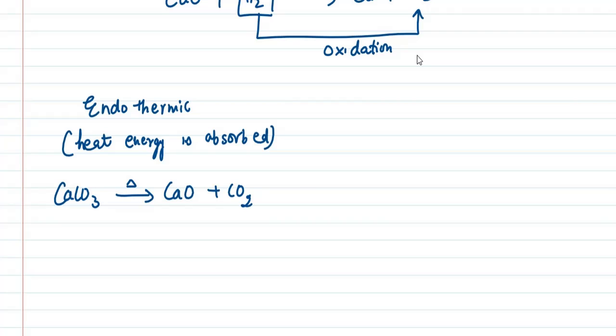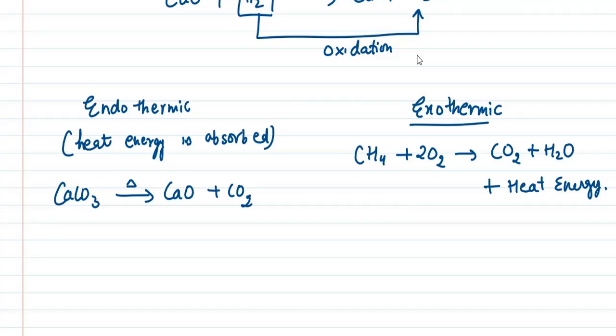On the other side, we have exothermic reaction, which means heat energy will be released along the formation of products. One example is CH4 plus oxygen gives carbon dioxide plus H2O plus heat energy is released. You can see that heat energy is being released here, so this is exothermic.